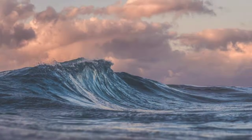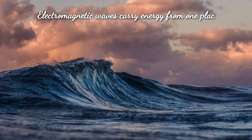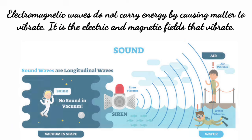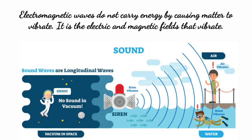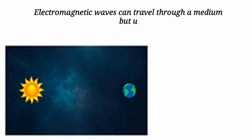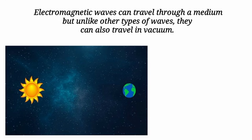Just like other waves such as water waves and waves on a rope, electromagnetic waves carry energy from one place to another. But unlike other waves, electromagnetic waves do not carry energy by causing matter to vibrate. It is the electric and magnetic fields that vibrate. Electromagnetic waves can travel through a medium, but unlike other types of waves, they can also travel in vacuum.